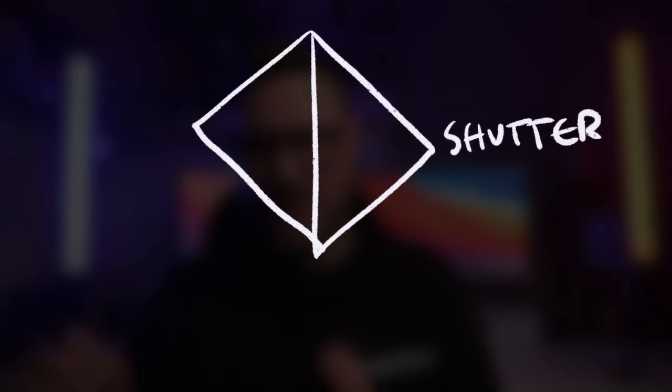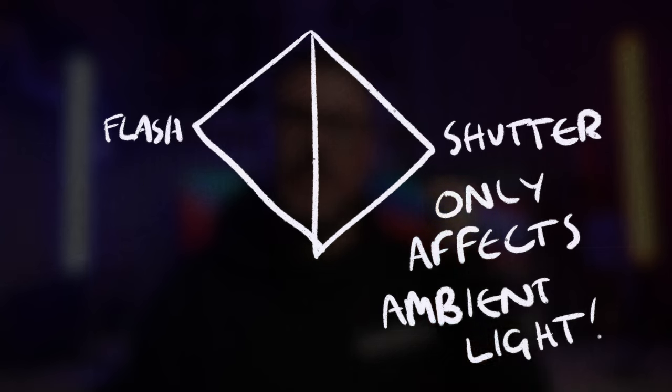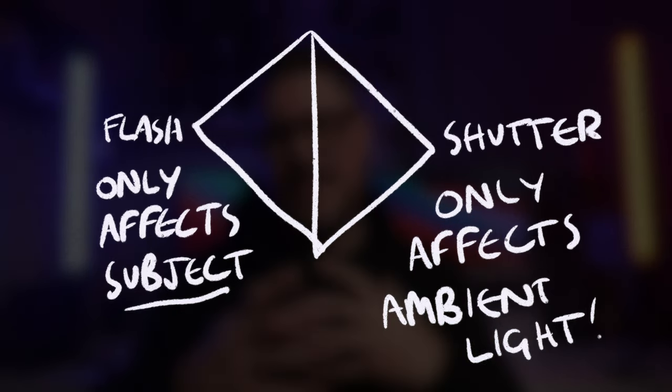Now we've got a photo where we're happy with the background — we then introduce the flash. You turn your flash on and take some test shots. Say you took a photo and were unhappy with the exposure — the subject was too dark. At this point you would not change the ISO, aperture, or shutter speed. You would only change flash power, because we're using flash power to dial in the exposure on the subject. If we change the shutter speed, it will only affect the background; if we change the flash power, it will affect the subject.